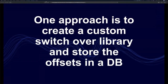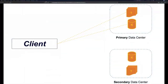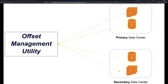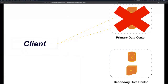One approach is to create a custom switchover library and store your own offsets. A client connects to a primary data center, an offset management utility writes translated offset information to a secondary location. When the primary is unavailable, the client connects to the secondary and pulls its translated offsets from there. This is essentially what all vendor solutions and Mirror Maker 2 have already built — you could roll your own, or just use one of them.